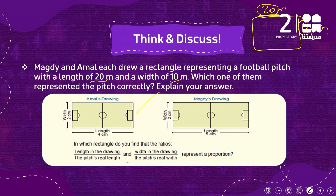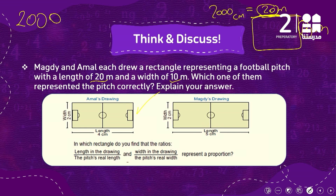Let's change the measurements to centimeters. 20 meters converted to centimeters: multiply by 100, so we get 2000 centimeters. And for sure this one will be 1000 centimeters. Let's write 1000 centimeters here.